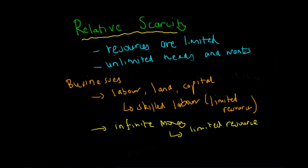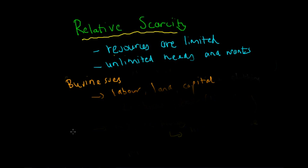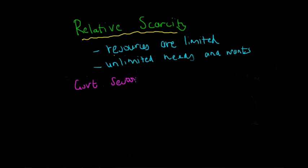Now that is just a basic understanding of how businesses also have unlimited needs and wants. Let's move on to the government sector and how the government sector also has unlimited needs and wants. The business of the government is a sector which produces public goods and services.